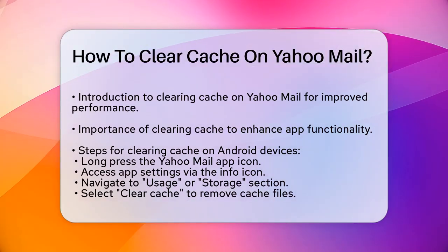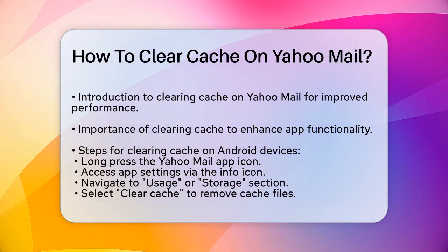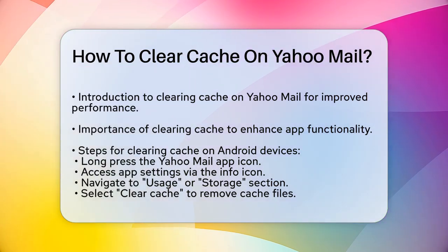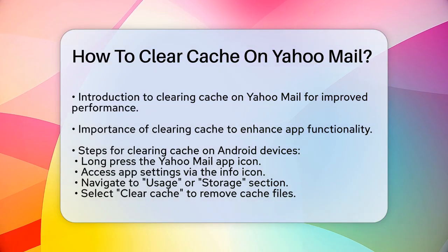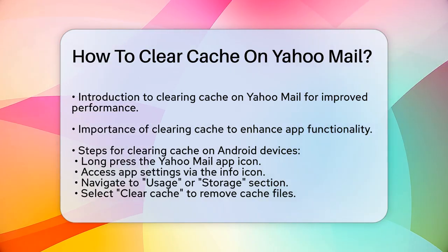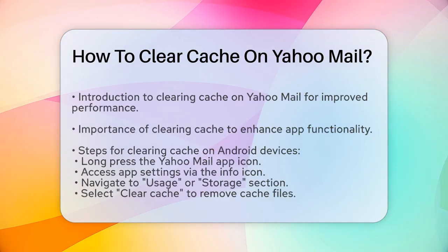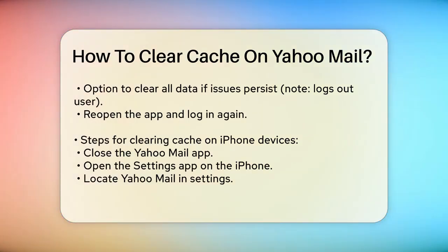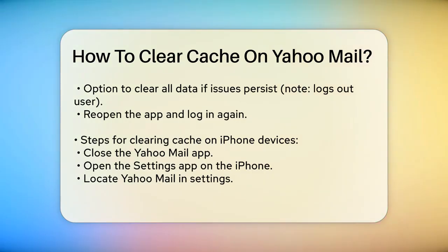For Android devices, to clear the cache on your Yahoo Mail app, follow these steps. Long press the Yahoo Mail app icon on your home screen or in your app drawer. Click the info icon that appears in the top right corner to open the app settings. Scroll down to the Usage or Storage section and open it. Here, you'll find options to Clear Cache and Clear Data. Click on Clear Cache to remove the cache files.